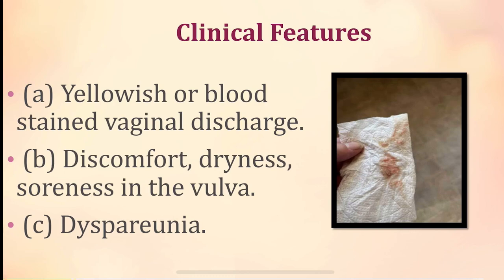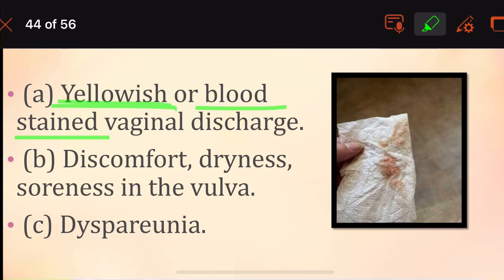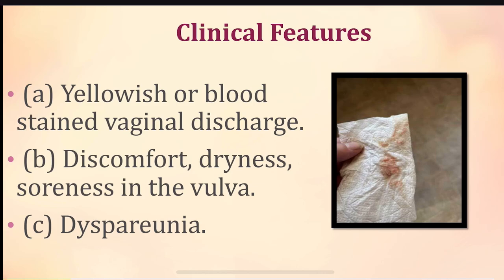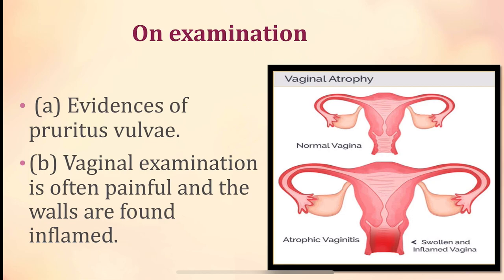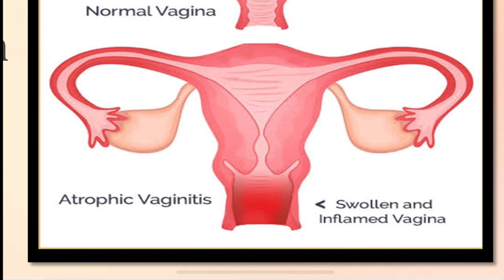Clinical features of atrophic vaginitis: the woman suffers with yellowish or blood-stained vaginal discharge, discomfort, dryness, and soreness in the vulva, as well as dyspareunia. On examination, there is evidence of pruritus; vaginal examination is often very painful with tenderness, and the walls are very inflamed and swollen.